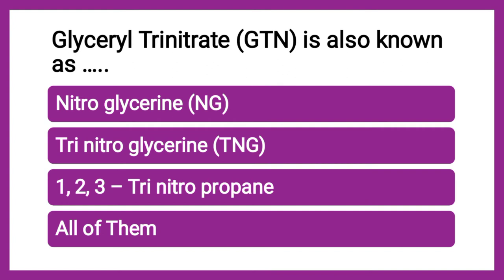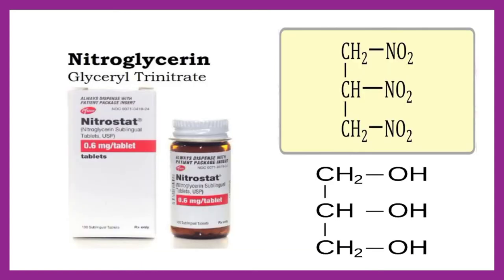Next question: Glyceryl trinitrate (GTN) is also known as — nitroglycerine, trinitroglycerine, 1,2,3-trinitropropane, or all. The correct answer is all of them. Looking at the structure: glycerine has three hydroxyl groups (CH2-OH, CH-OH, CH2-OH). All three hydroxy groups are replaced by nitro groups, making it nitroglycerine. Since there are three nitro groups, it is trinitroglycerine. With three carbons, it is also 1,2,3-trinitropropane.